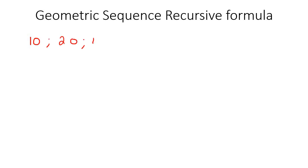In this lesson, we're going to look at the recursive formula of a geometric sequence. When something is geometric, that is when you are multiplying by the same amount. For example, 10, 20, 40, 80. So what we can see is that we are multiplying by 2 each time.